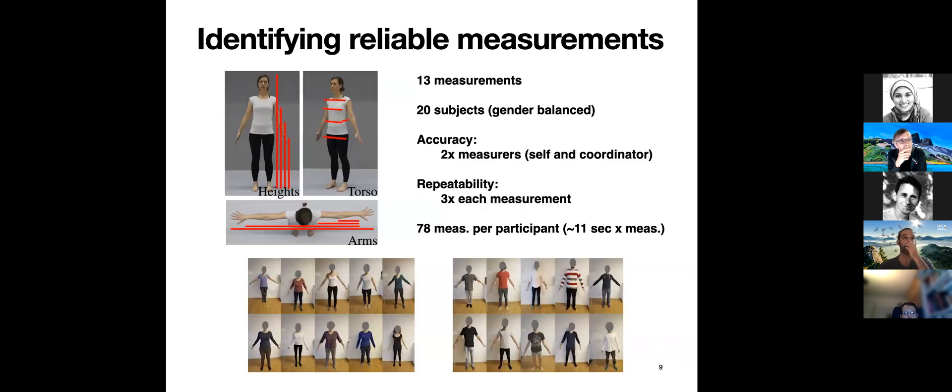This is a tool we created using the HTC Vive wands. What you're seeing here is a participant measuring herself in 3D with the wands. This takes less than five minutes and doesn't require any picture. The challenge was to identify reliable measurements. We want people to be measured, so the question isn't which measurements are good ones, but which measurements can be performed accurately. We studied 13 measurements with 20 subjects, gender balanced. We measured the accuracy, so people were measured by themselves and by a trial coordinator to assess accuracy and repeatability. Each measurement was performed three times, so 78 measurements per participant.